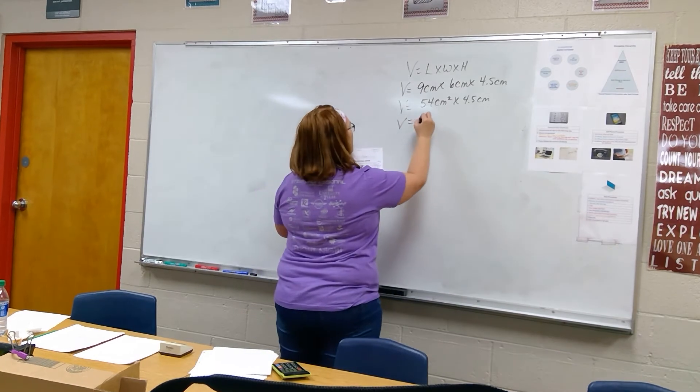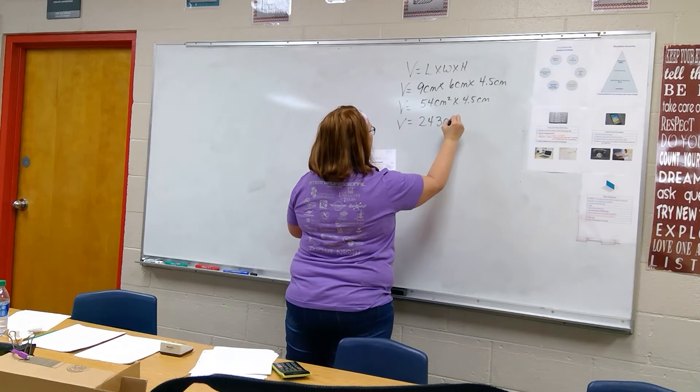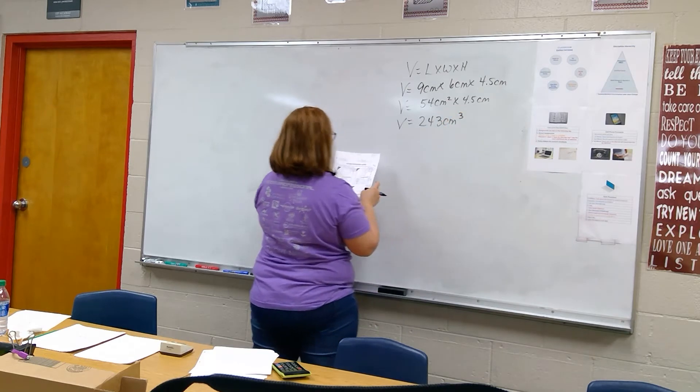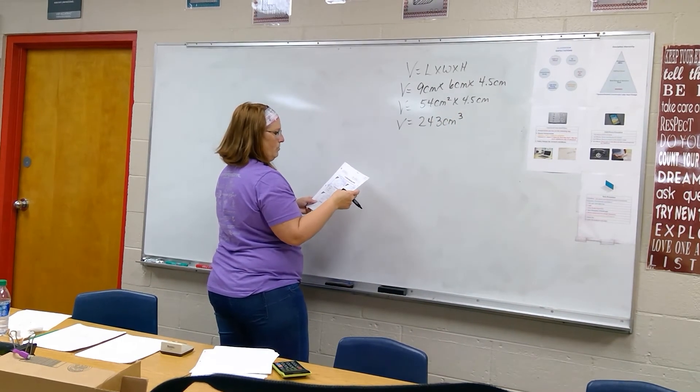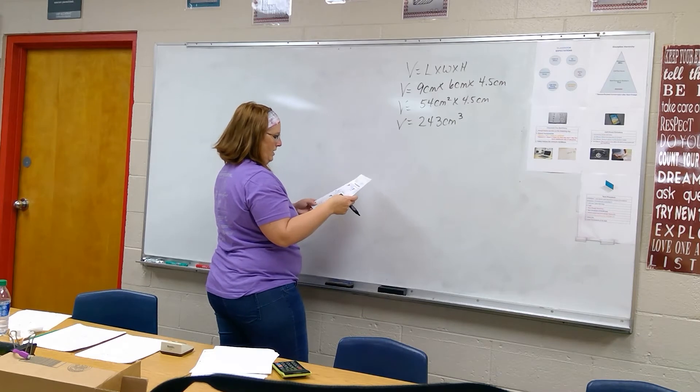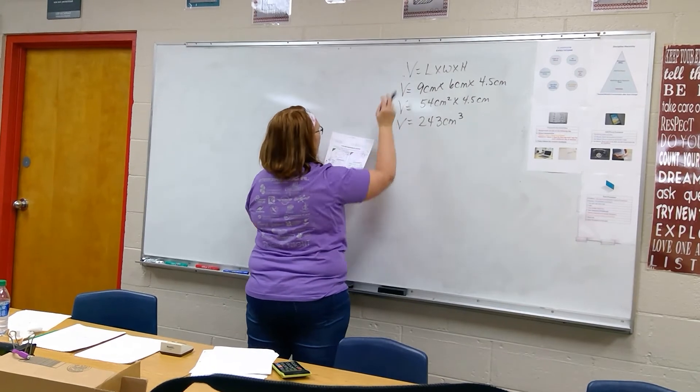Volume equals 54 times 4.5, it's 243 centimeters cubed. You're going to do the same thing for the next one: length times width times height, use the same formula right here.